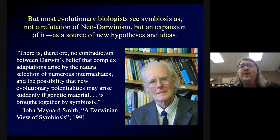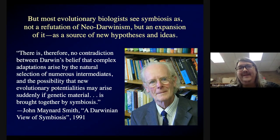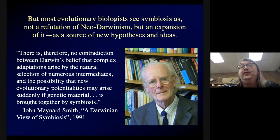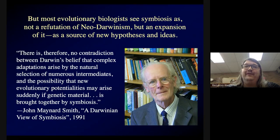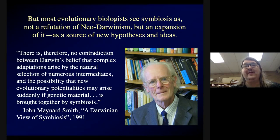Darwinian evolution is basically: organisms vary, the variation can be inherited, and at least some of that variation makes a difference in the probability of reproduction. As John Maynard Smith pointed out, there's no contradiction between that and the idea that symbiosis could essentially be a new source of variation. Organisms can vary because they have different alleles created by mutation, but they can also vary if they acquire different symbionts, and selection could act on this. Most would agree that Margulis expanded evolutionary biology immensely.